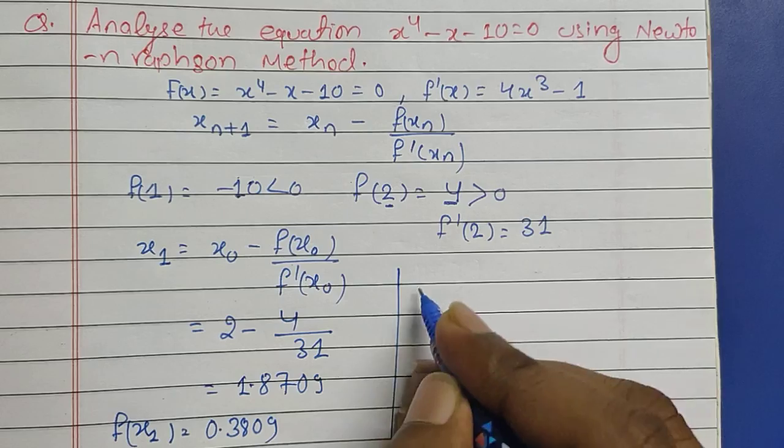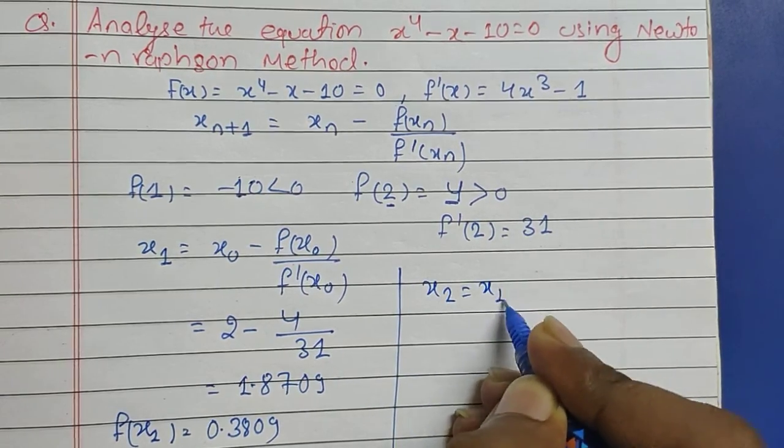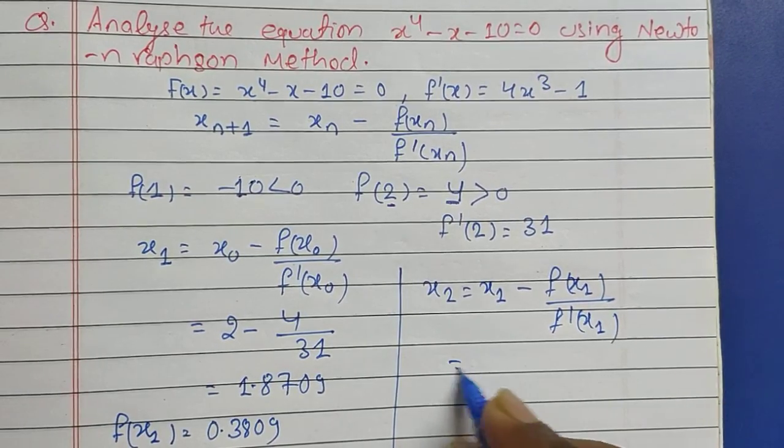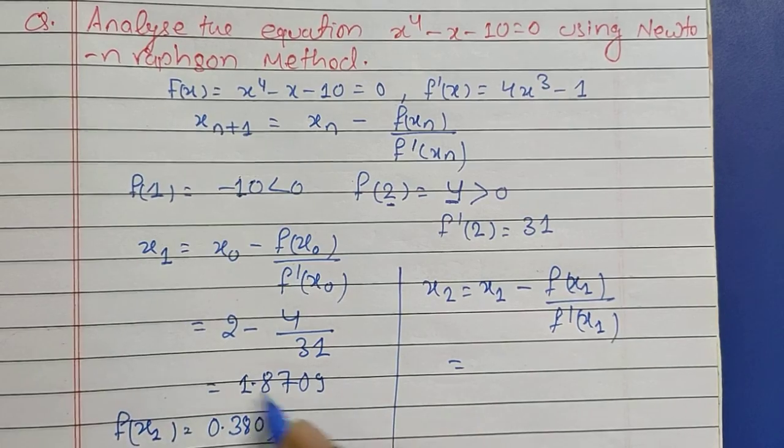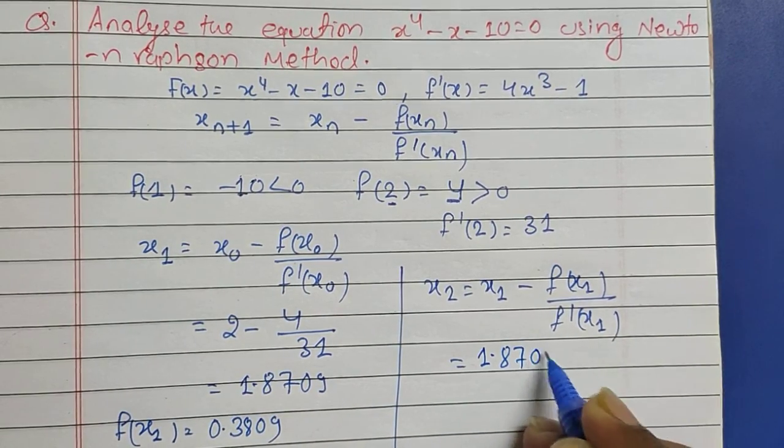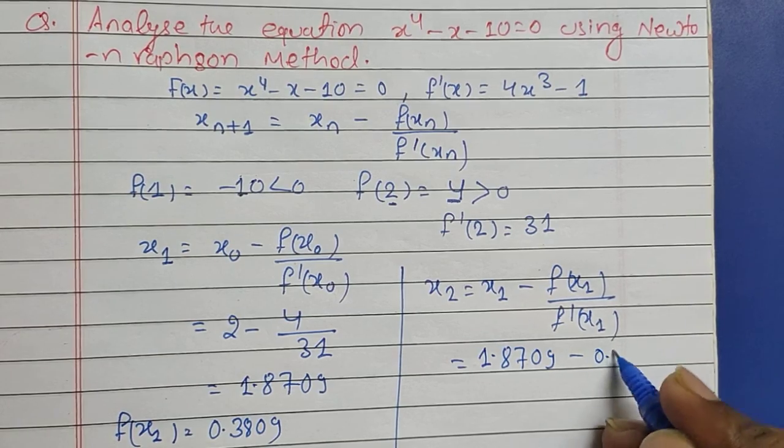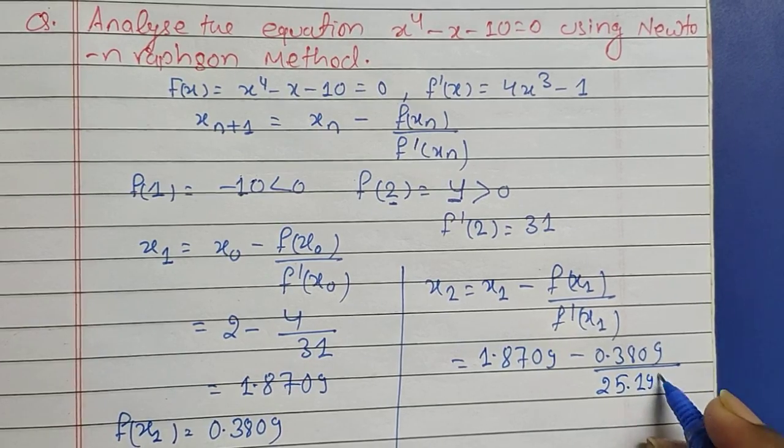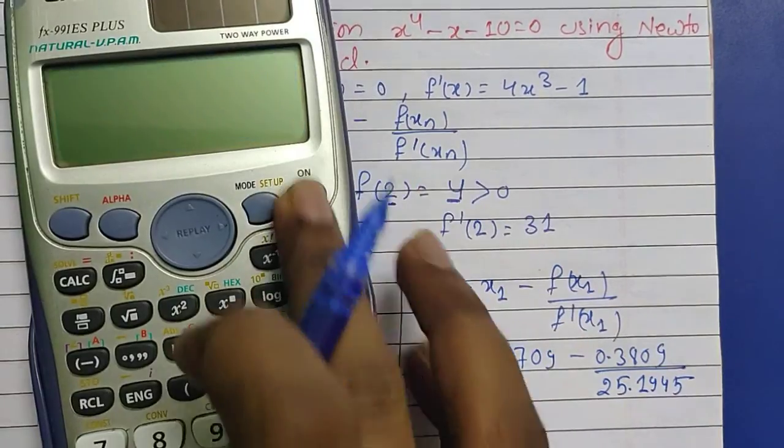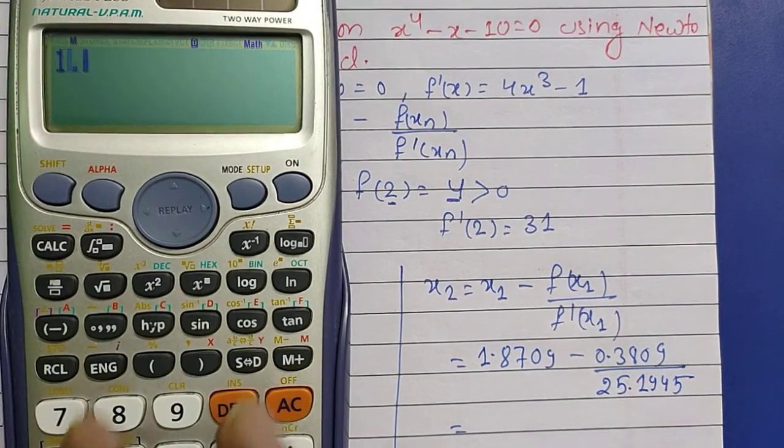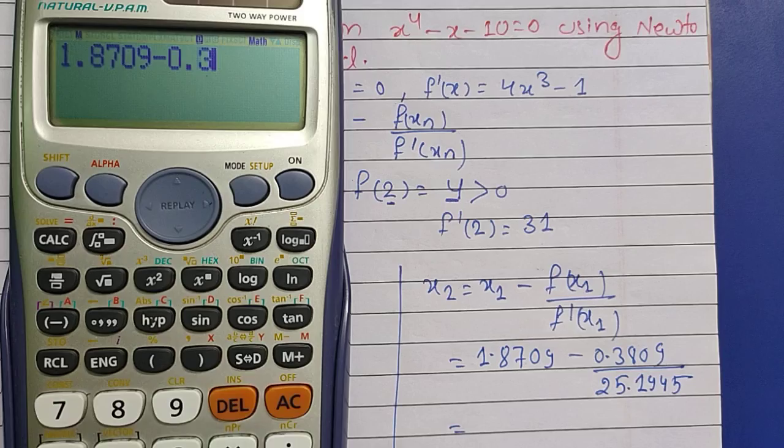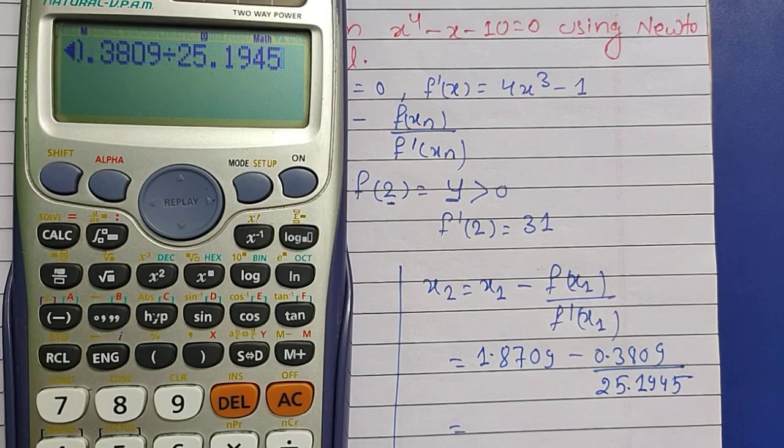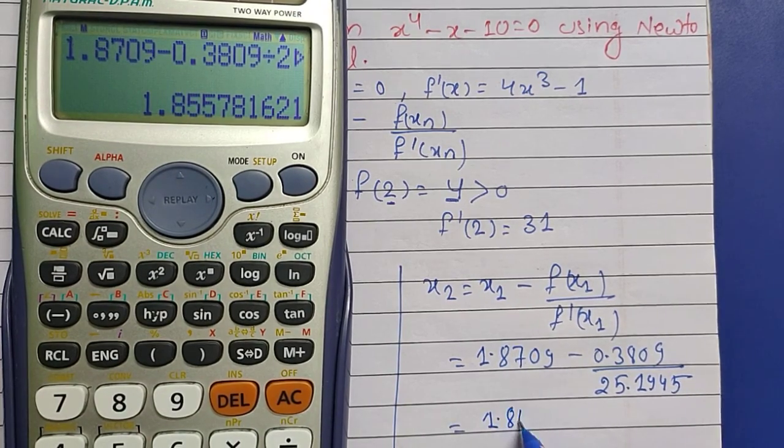And we have got f'(x_1) as 25.1945. Now the second root will be x_2 = x_1 - f(x_1)/f'(x_1). Now put the value of each term, x_1 is 1.8709 minus f(x_1) 0.3809 upon f'(x_1) 25.1945.